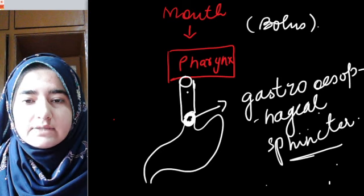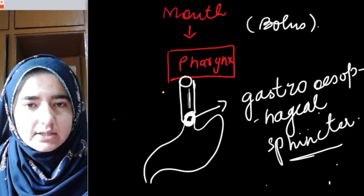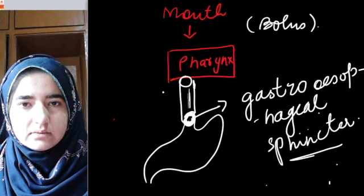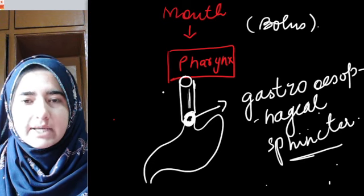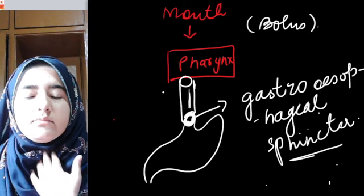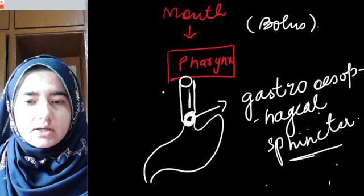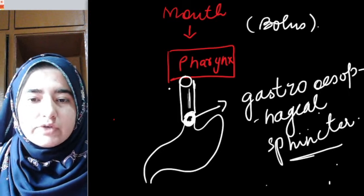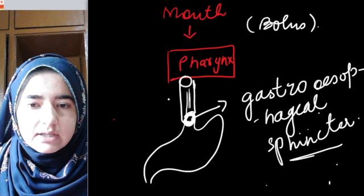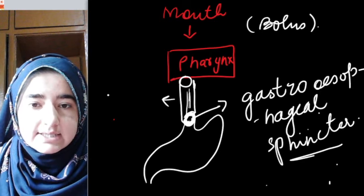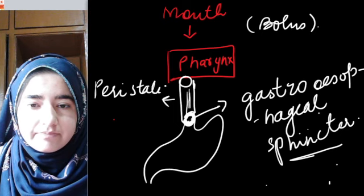The esophagus acts as a passage from the pharynx to the stomach — no digestion takes place in the esophagus. Food is drawn into the stomach through peristaltic movement.